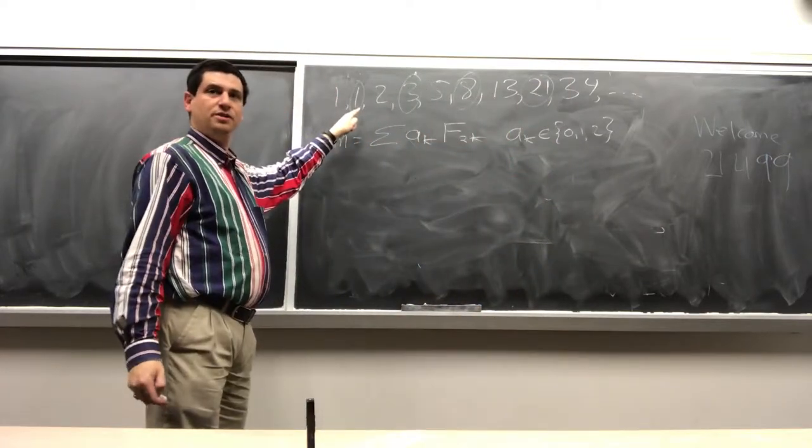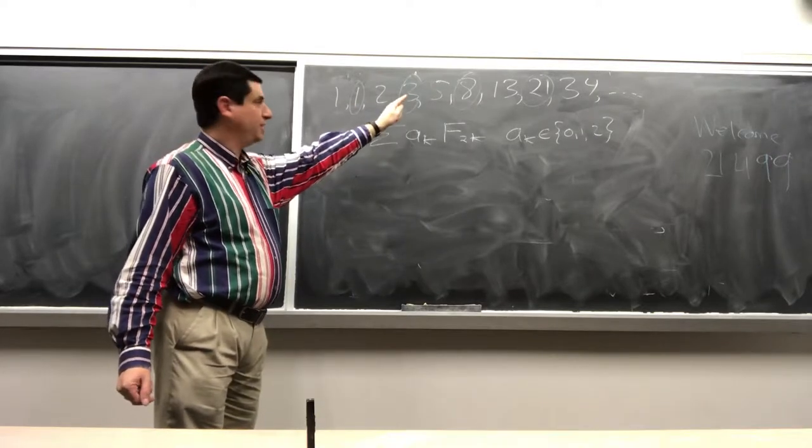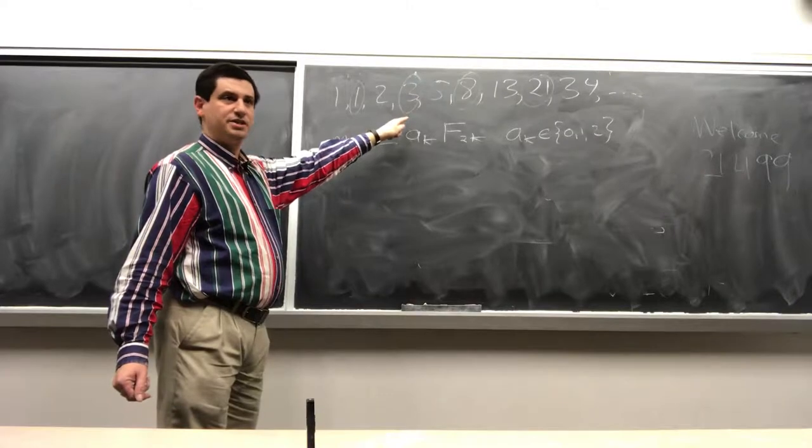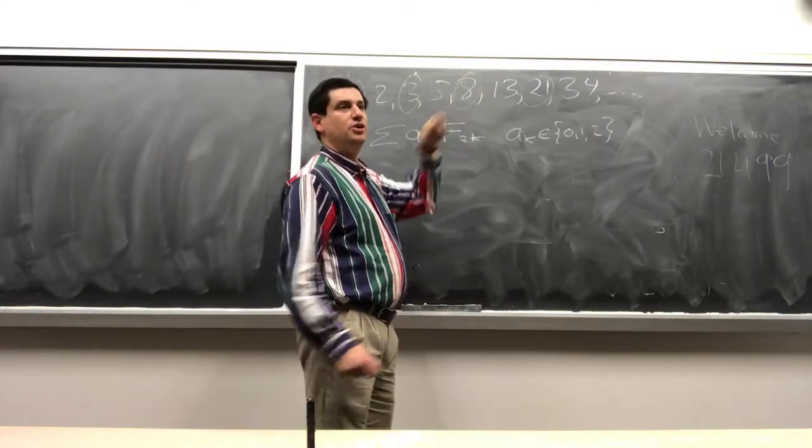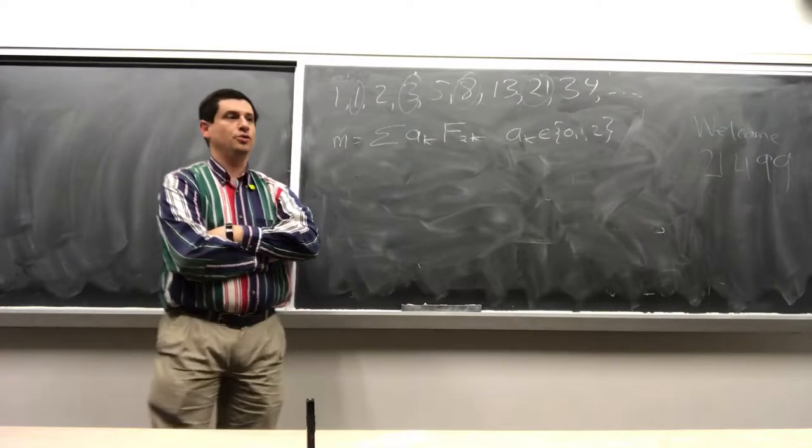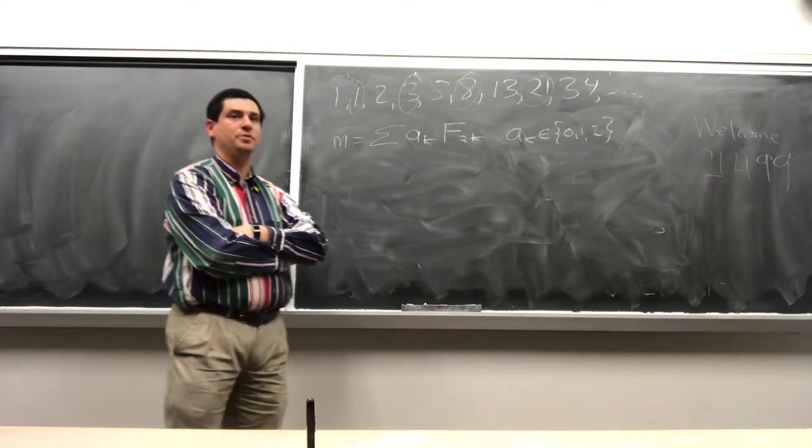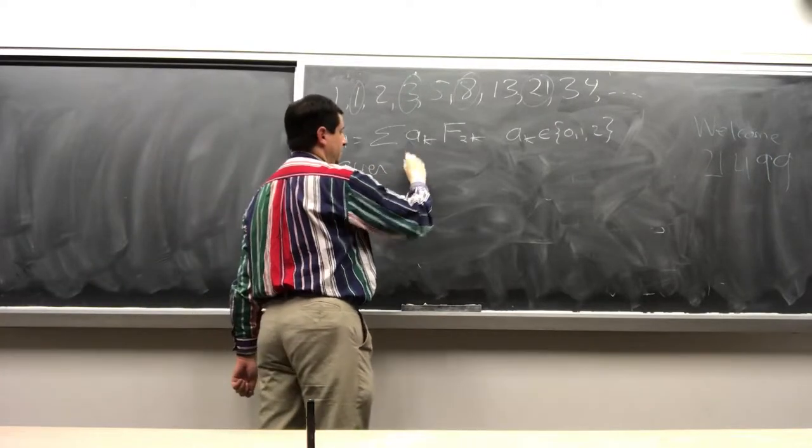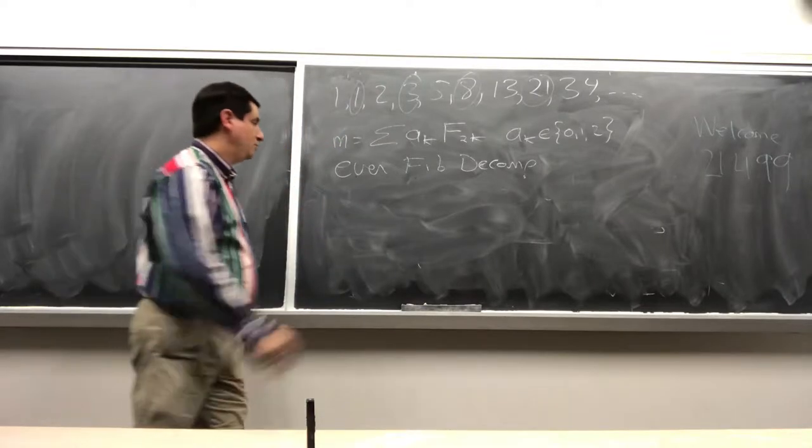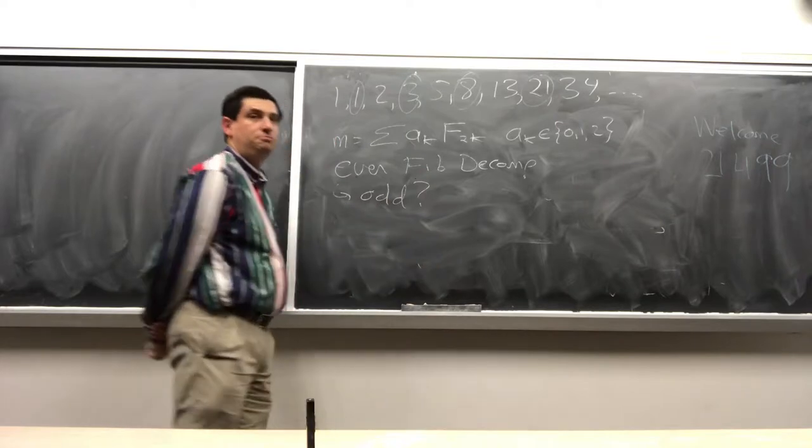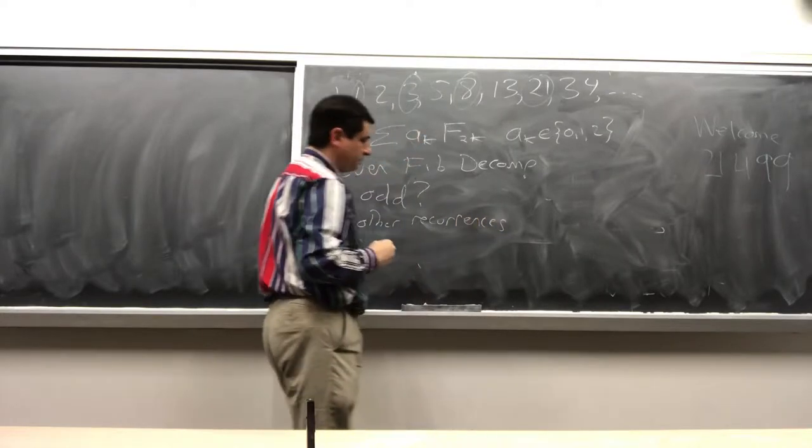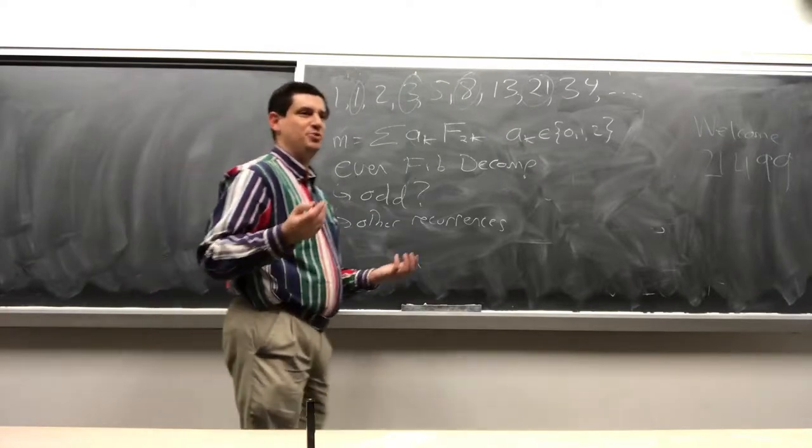So, the first question is, do we believe that every number can be written as a sum of just even indexed Fibonacci's? Where you can use each number either 0 once or twice. But we can clearly get 1. So, if I have things right, these should be the even indexed Fibonacci's. So, I can get 1. I can double 1 and I can get 2. If I want to get 3, well, I've got 3. If I want to get 4, I can get 4. 5, 3 and 2 ones. 6 would be 2 threes. 7 would be 2 threes and a 1. 8 would be just an 8. So, it's at least looking plausible that I can write every number as a sum like this.